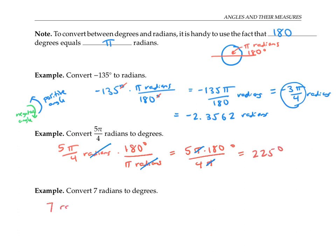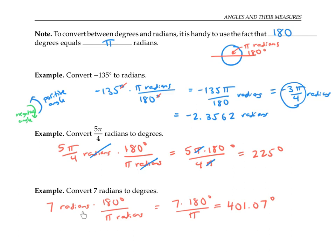Converting seven radians to degrees is similar — I need to multiply by 180 degrees over pi radians. If I work out seven times 180 over pi on my calculator, I get 401.07 degrees up to two decimal places. Notice that my answer of a little more than 400 is more than 360 degrees, so this is more than a full circle. That makes sense, since seven radians is more than two pi radians, since pi is itself a little more than three.